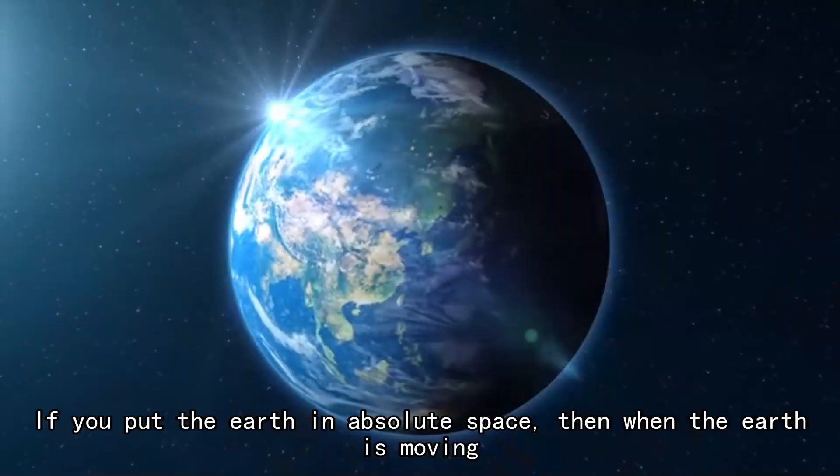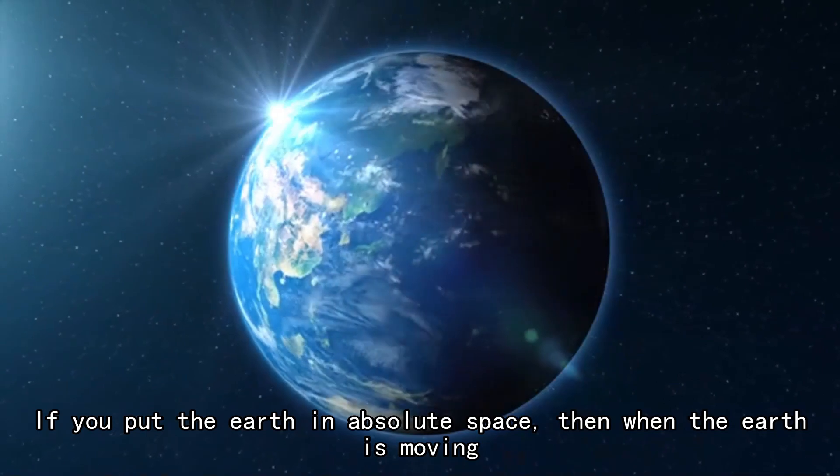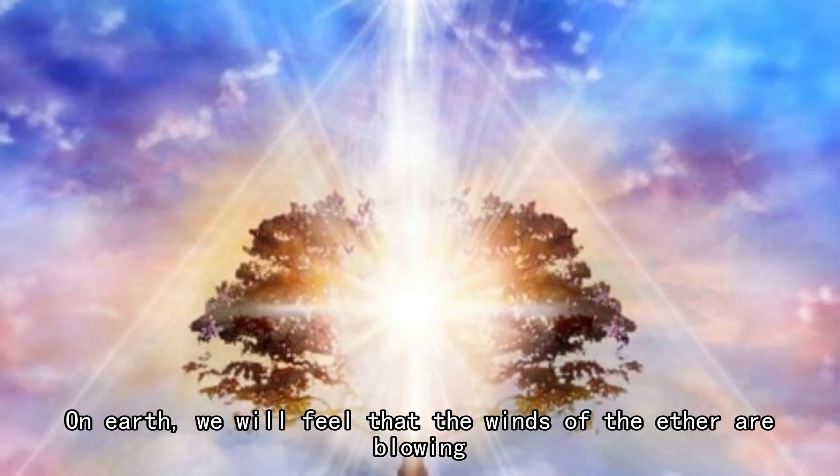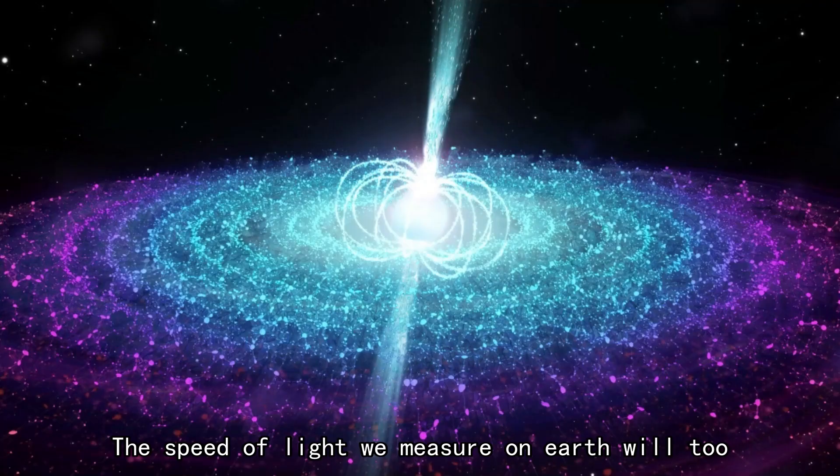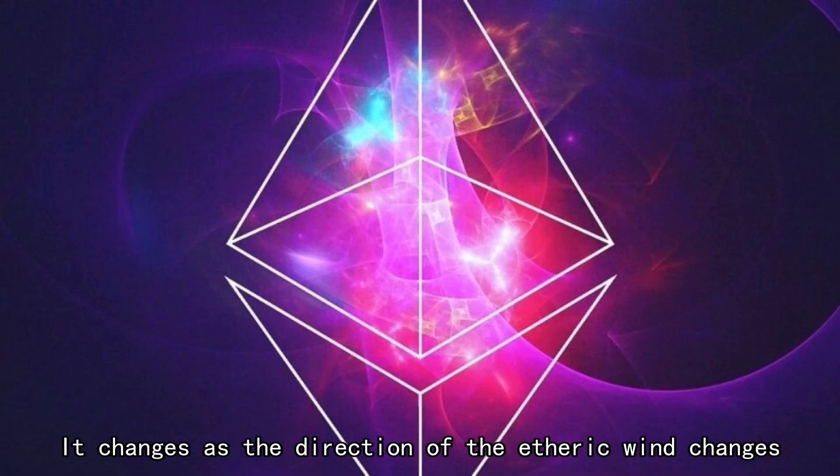If you put the earth in absolute space, then when the earth is moving, on earth we will feel that the winds of the ether are blowing. The speed of light we measure on earth will change as the direction of the etheric wind changes.